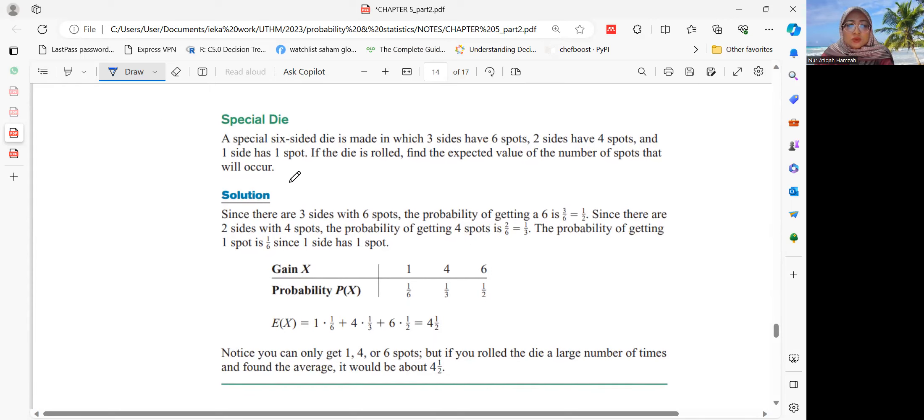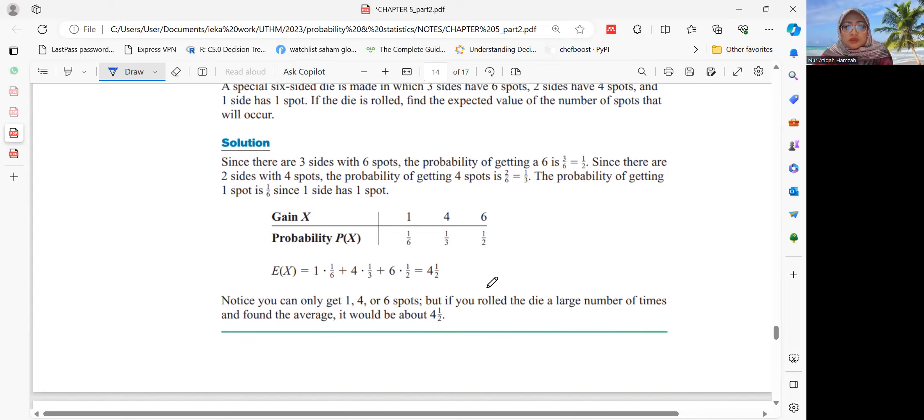The probability we must look at based on the statement above. If only one spot, we have only one, so 1 over 6. Four spot, we have two, so 2 over 6, which is 1 over 3. And six spot, we have three, so 3 over 6 is 1 over 2.